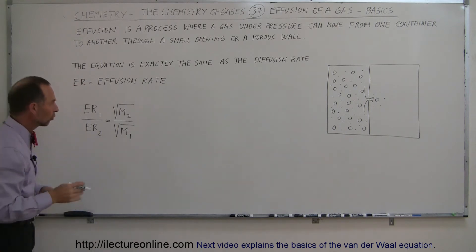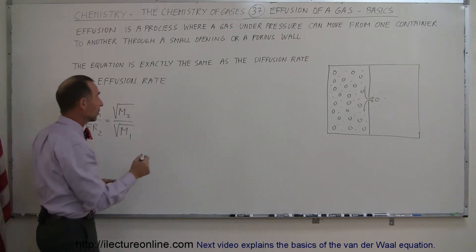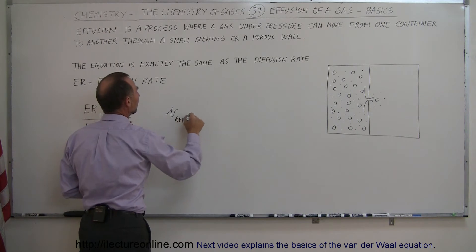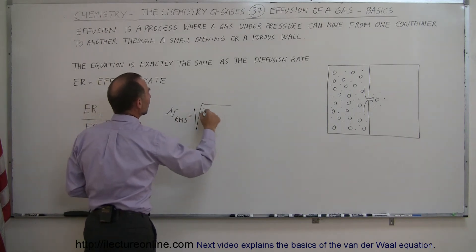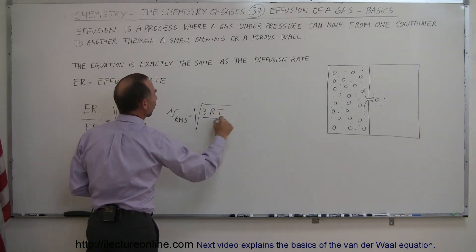So they're inversely proportional to the square root of the mass. Again, for the very same reason, that vRMS is equal to the square root of 3RT over the molar mass.